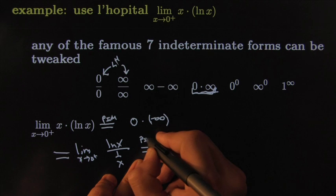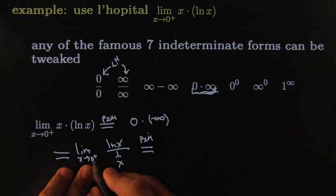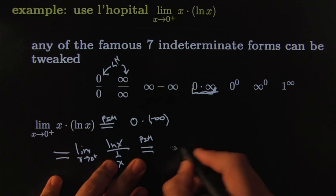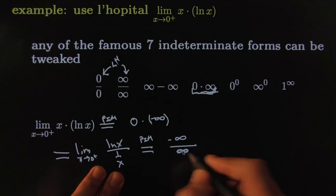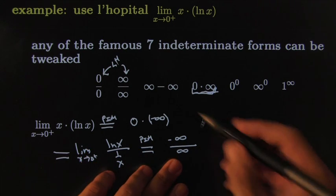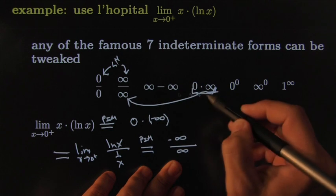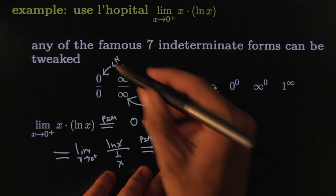If I try the plug-in method, if I try the plug-in method as x goes from zero from the positive side, I would get infinity over infinity. Ipso facto! That right there has now become, by rewriting it, that form has now become this one, which is L'Hopital friendly.